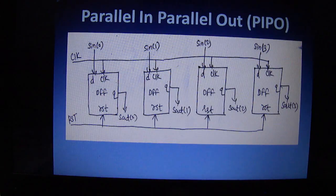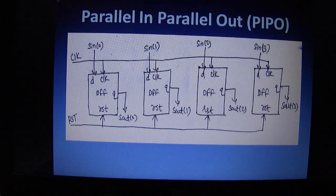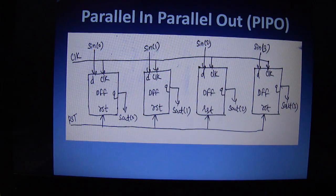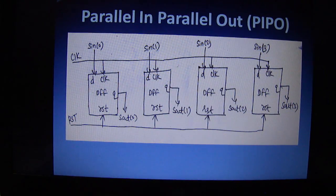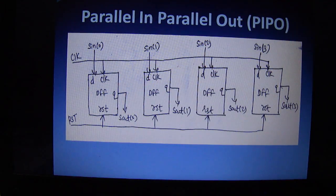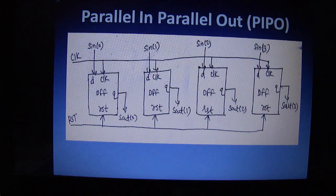This is the parallel in parallel out structure. Four D flip-flops are used here. All these flip-flops are synchronized with the same clock and same reset. The only difference is that you are simultaneously providing inputs to all the flip-flops and simultaneously getting outputs from all the flip-flops. This is a 4-bit parallel in parallel out register.